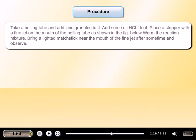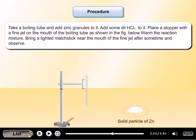Point number 2: Take a boiling tube and add zinc granules to it. Add some diluted HCl to it. Place a stopper with a fine jet on the mouth of the boiling tube as shown in the figure below.